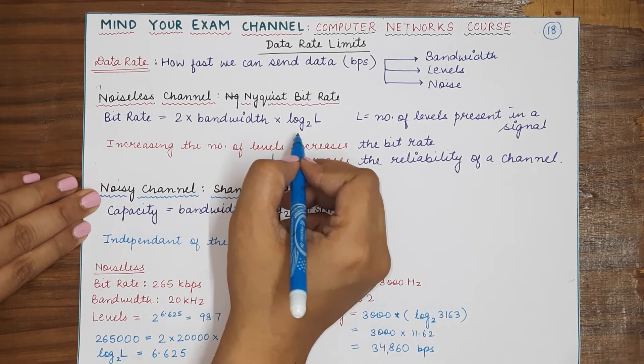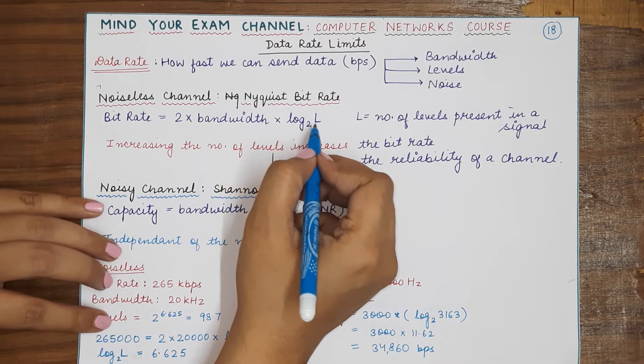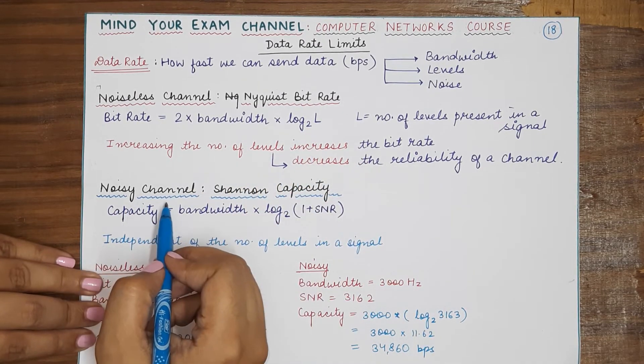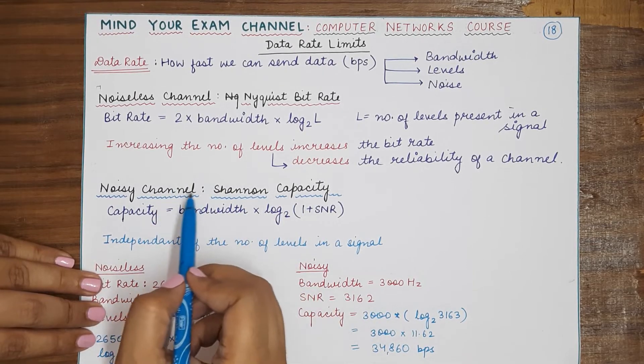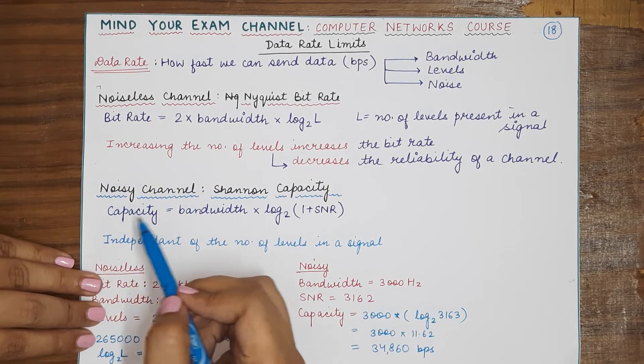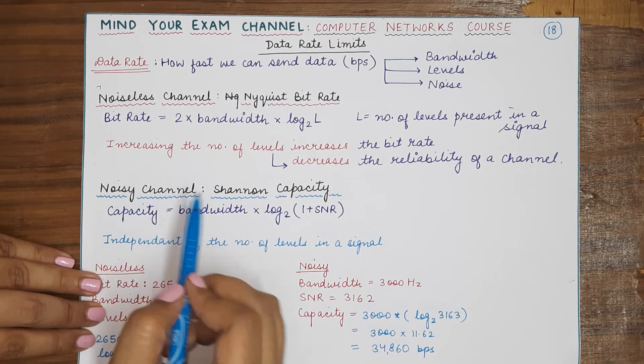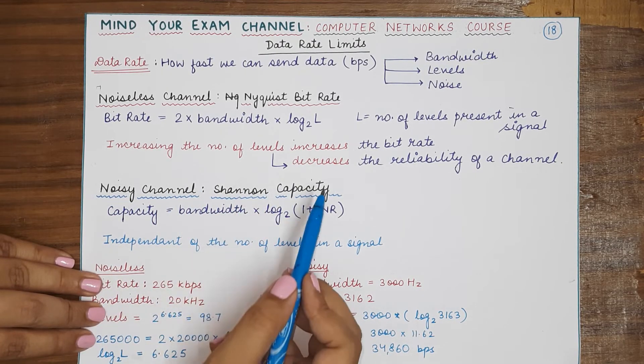Now coming to a noisy channel. If in the question you are given that you have to calculate the bit rate or the capacity of a channel for a noisy transmission medium, then you use the Shannon's formula. Shannon was another scientist, and the capacity in this case is given by the formula: bandwidth × log of (1 + SNR) base 2.